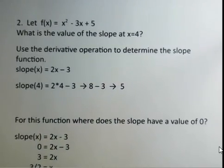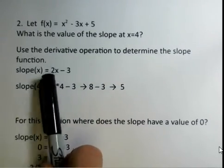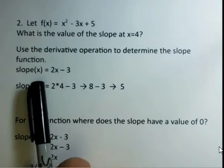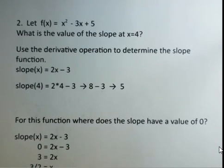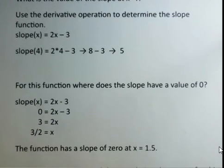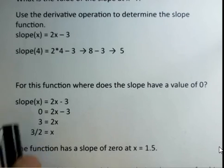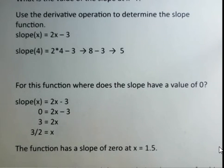Taking the derivative of the function gives you the slope function. The slope as a function of x equals 2x - 3. We put in the x value, we get the slope of 5. If we want to know where the slope is 0, we put 0 in for the slope and solve for x. Keep practicing with that and you're ready to do physics using calculus tools.